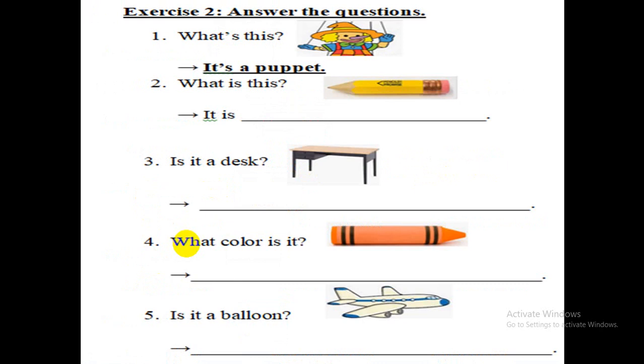Exercise 2. Answer the questions. Number 1 is the example. We do number 2. What is this? Your answer. It is a pencil. Good. The others, please do the same.